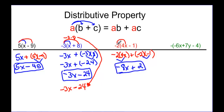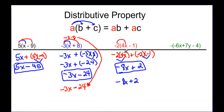Again, you can think of it as negative two and just go ahead and do the work directly. Negative two times four X is negative eight X, and negative two times negative one is positive two. So you can distribute and do these steps in your head if you want.